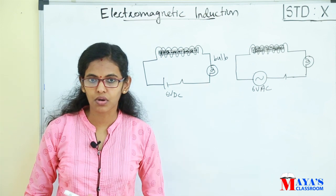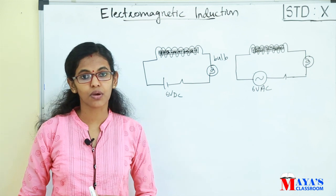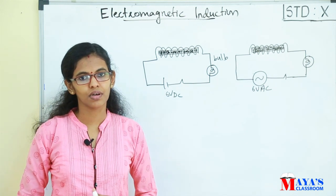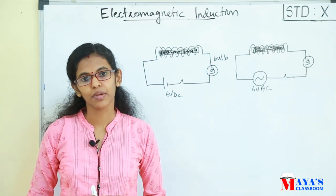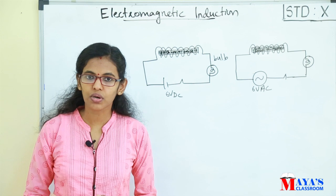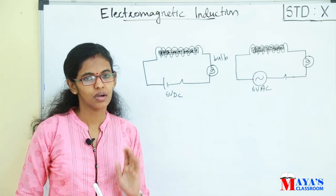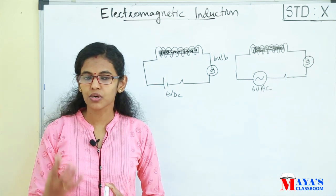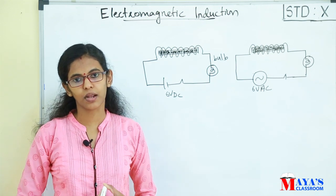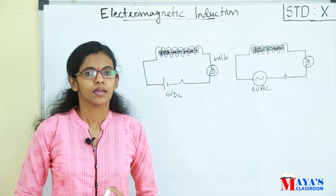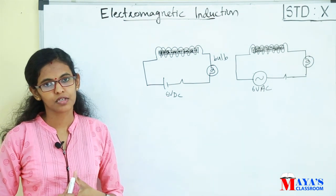When the bulb is connected in the second circuit and AC is applied, the bulb will glow. That second circuit is the AC circuit. The bulb should be in a circuit, and magnetic flux is produced.